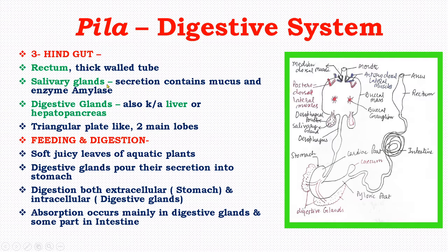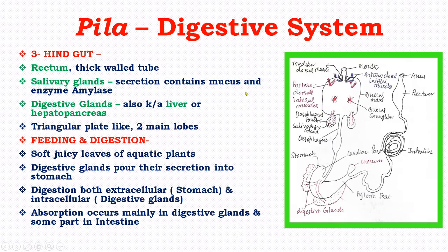The salivary glands are paired glands occurring on each side of the buccal mass, posteriorly partially covering the esophagus. Their secretion contains mucus and the enzyme amylase, which digests starch.